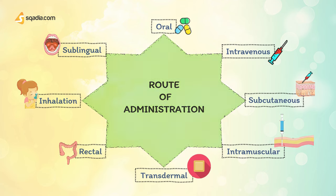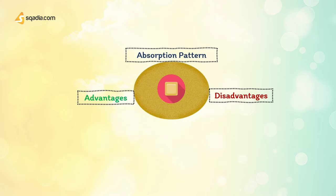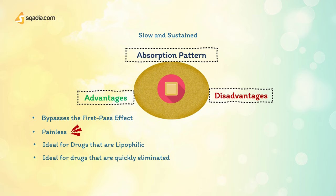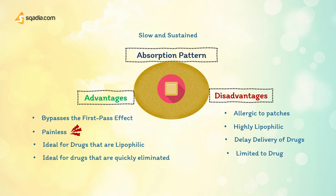Transdermal is another route of drug administration. It comes in patch form, and its absorption is slow and sustained. Advantages are that it bypasses the first-pass effect, is convenient and painless, and is ideal for drugs that are lipophilic and have poor oral bioavailability or are quickly eliminated from the body. Disadvantages include that some patients are allergic to patches causing irritation, the drug must be highly lipophilic, it may cause delayed delivery to the pharmacological site of action, and it is limited to drugs that can be taken in small daily doses.